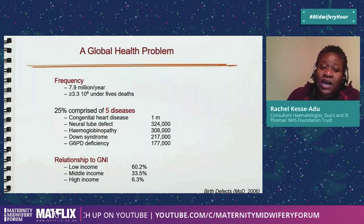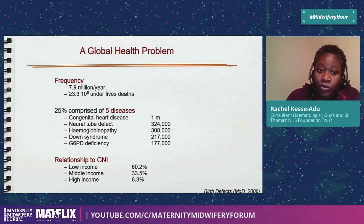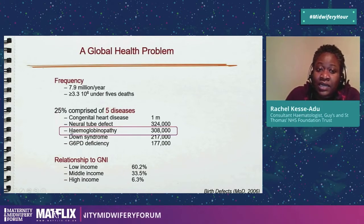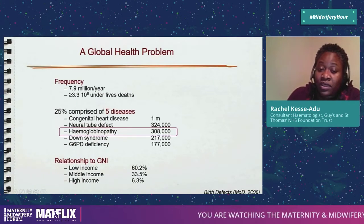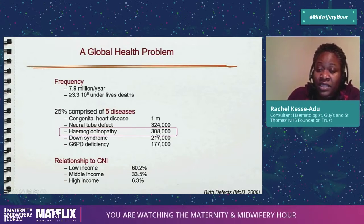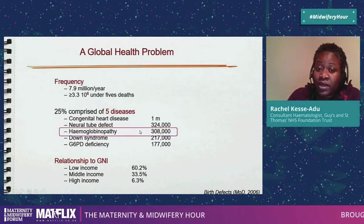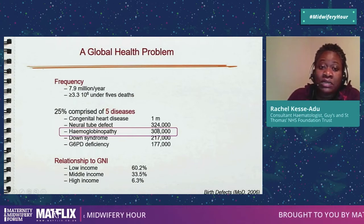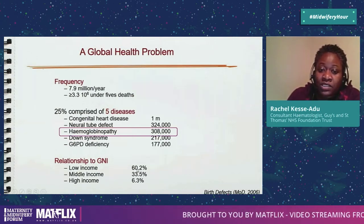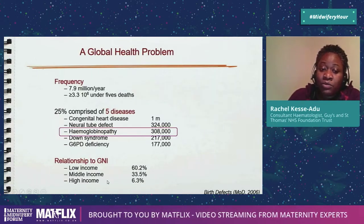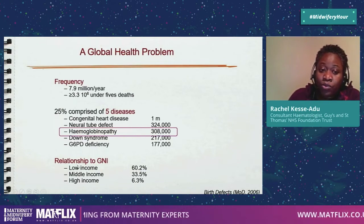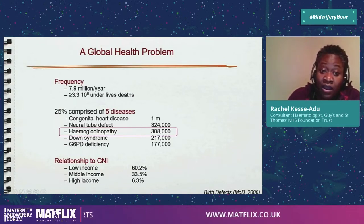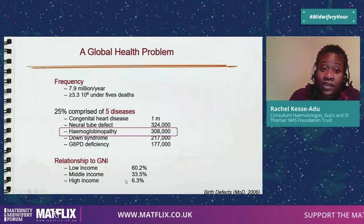The haemoglobinopathies are a global health problem. It's number three in the top five inherited conditions across the world. This is a fairly old slide from 2006, but that's roughly how many births there still are now, every single year. You can see that the relationship between haemoglobinopathies and how rich your country is, is inverse — the poorer you are, the more of these patients you have; the higher your income as a nation, the fewer.